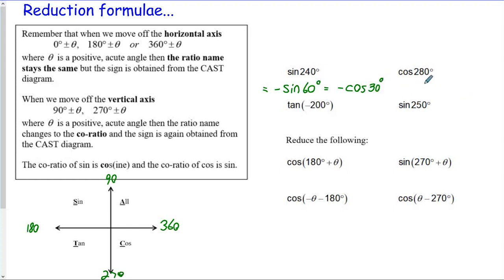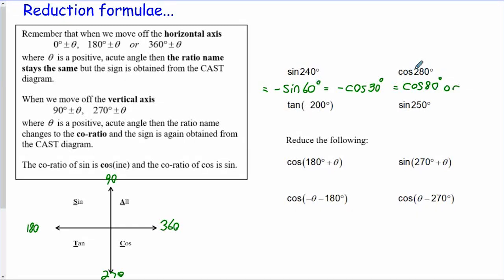Cos of 280 degrees. At 280 degrees we're in quadrant 4. We are 80 degrees away from a horizontal axis, and if I come off a horizontal axis I keep the ratio name the same - so that's cos of 80. Those two things are exactly the same size. Cos is positive in the fourth quadrant, so that's the answer. Or you might say we're just 10 degrees into the fourth quadrant off the vertical axis, but then I must change to sine of 10 degrees. Sine is negative in quadrant 4 but we're talking about cos in quadrant 4. Cos in quadrant 4 is positive, so the answer is just sine of 10.